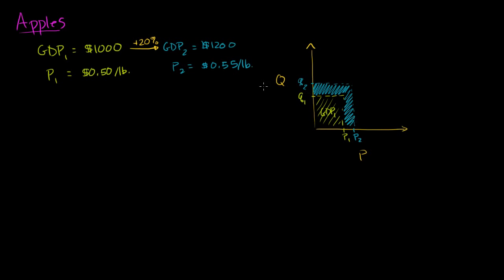The difference between GDP in year two and GDP in year one is the area shaded in blue, which equals that $200 increment. When you look at it, you see that some of that $200 is due to an increase in quantity, but a lot of it is also due to an increase in price.